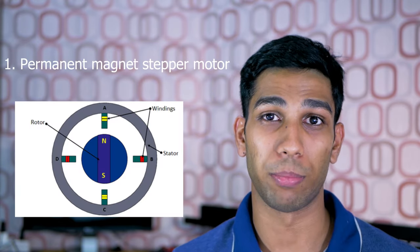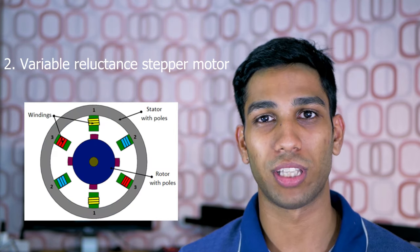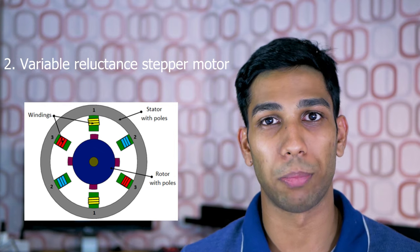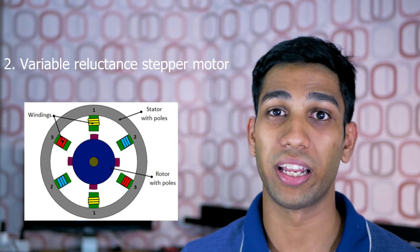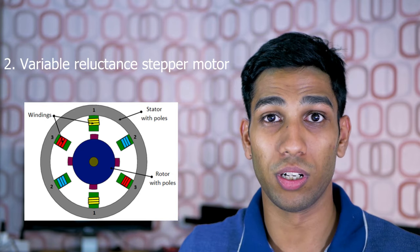Before we move on, let's quickly talk about the three types of stepper motors. The first is the permanent magnet stepper motor. This motor features a magnetic rotor. The second type of stepper motor is a variable reluctance stepper motor. This doesn't have a magnetic rotor like the last motor, but it features those U-shaped cutouts that I showed you earlier.